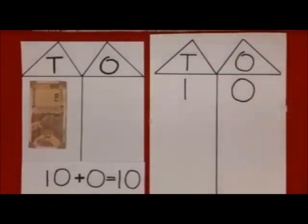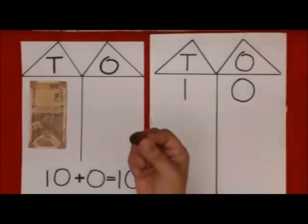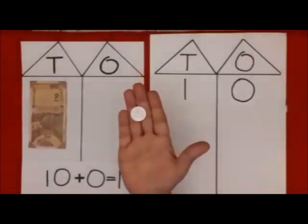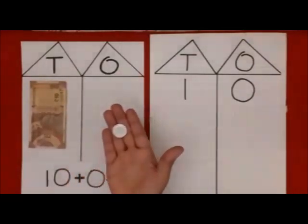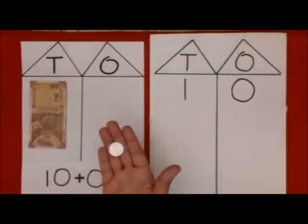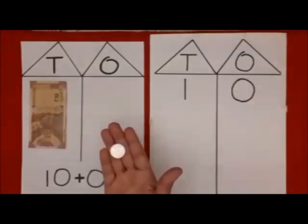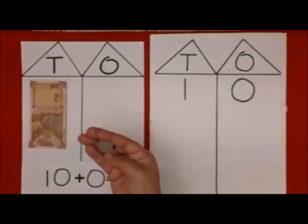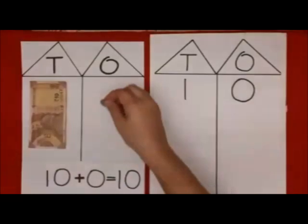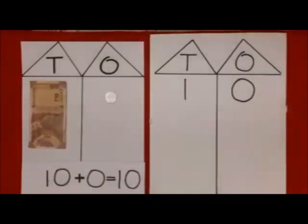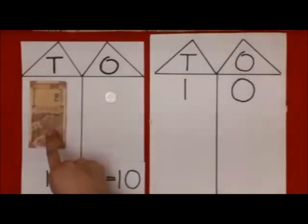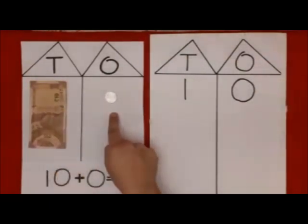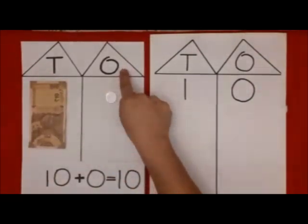Somebody's come — one more has come. Now, where will he go? He goes to 10's house, but they say no, no, no — you can't come here. You cannot come to 10's house. So he goes to 1's house. Now, what will happen? 1 ten and 1 extra. There is 1 extra in 1's house.